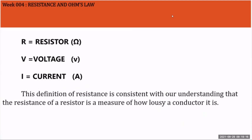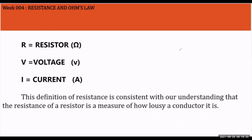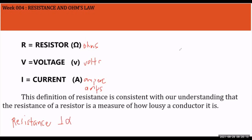Let's review the units. The unit for resistance is ohms. The unit for voltage is volts. The unit for current is ampere or amps. This definition of resistance is consistent with our understanding that the resistance of a conductor is a measure of how poor a conductor is. Resistance is inversely proportional — the direct reciprocal — of conductance.